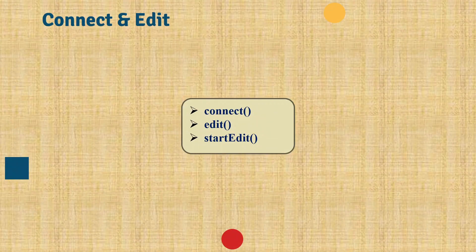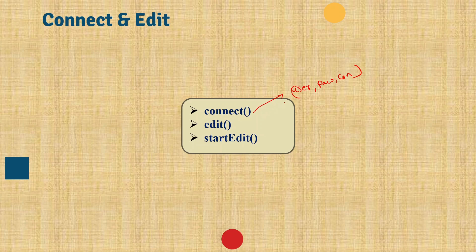First we will connect and enter the edit session. When we use the connect command you can also supply username, password, and connection string. If you don't want to put username and password inline, you can refer to my previous video and use the storeUserConfig function. After that we are going to enter an edit session and then start a session so that we can edit.